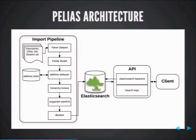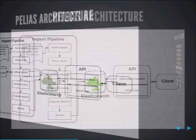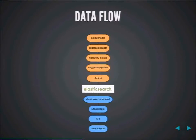Here is a detailed look at the input pipeline. Each importer implements the same pipeline: a Pellius model, then a deduper, a hierarchy lookup, a suggest pipeline, and finally the DB client which talks to Elasticsearch. Using Node.js streams, it's easy to pipe data through these various modules before it goes into Elasticsearch.